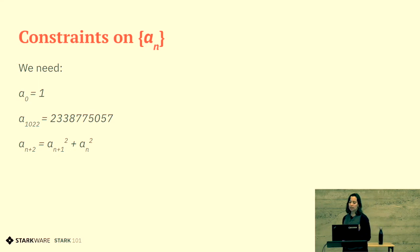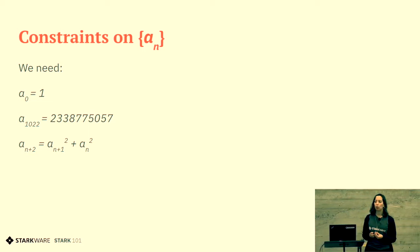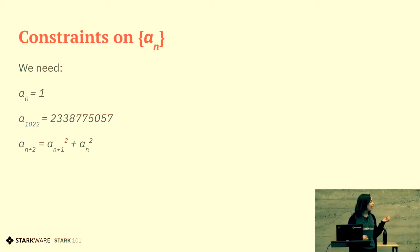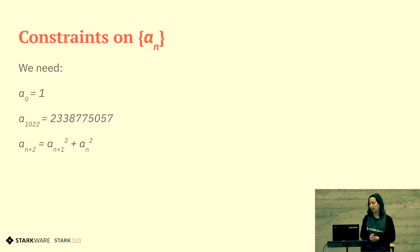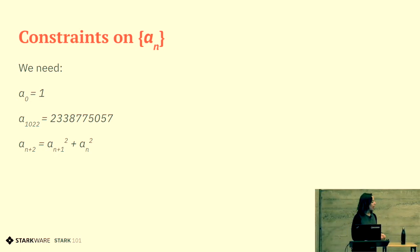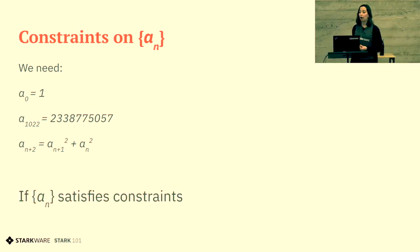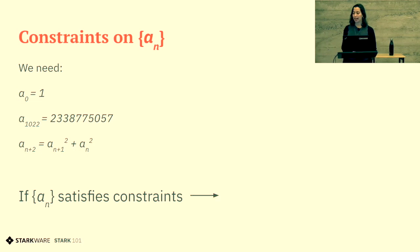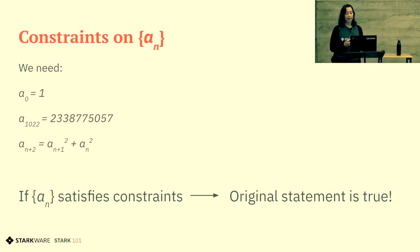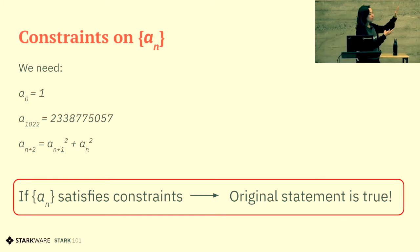Let's look at this set of constraints. In order to prove our statement, we need to show that a₀ equals 1, that the last element equals this specific number, and that each three consecutive elements satisfy this equation. If our sequence aₙ satisfies these constraints, it exactly means that the original statement is true. So it is enough to prove these three constraints.